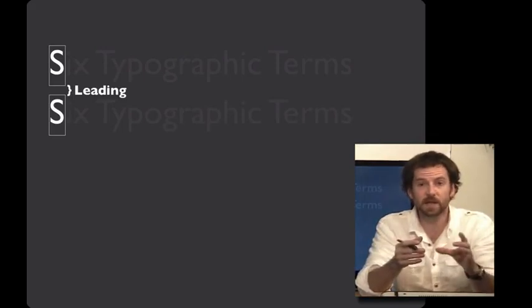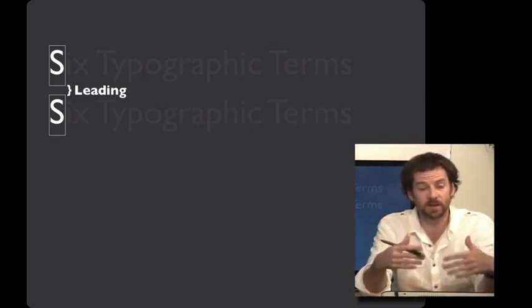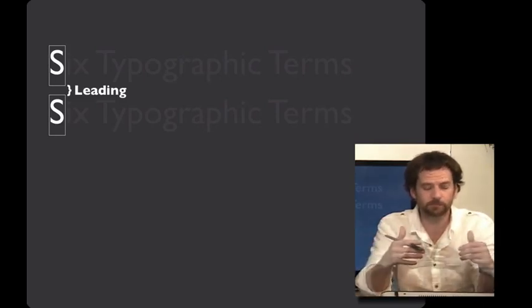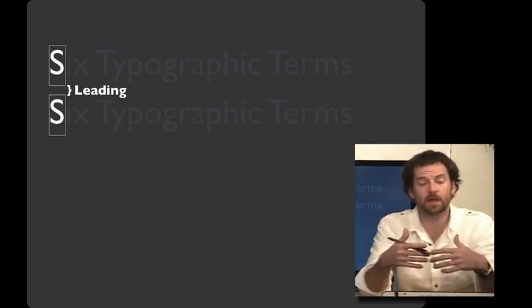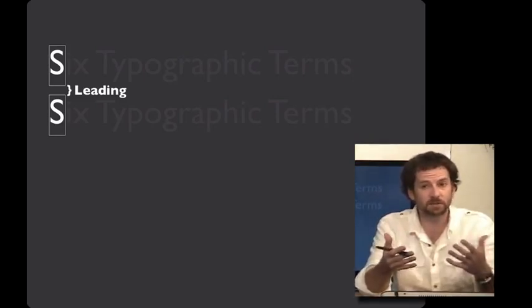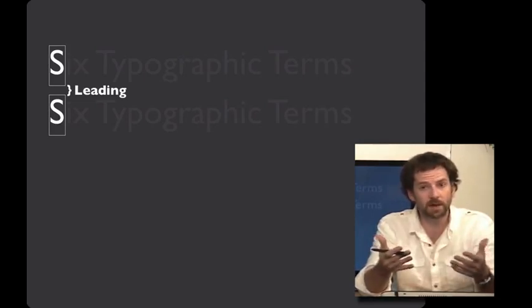Our second term is leading. If we have solid blocks of lead type that form the letters, the spacing that we get between the lines was achieved by putting thin strips of lead in between the lines. And that was called the leading. It's customary to have 20% of your font size as your leading. And so if in your word processor you set 10-point type, it will usually automatically add an extra 2 points of spacing to put 12 points in between each line.